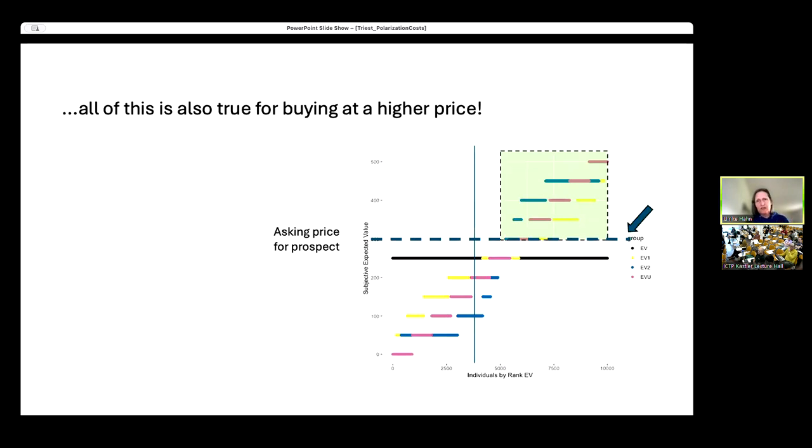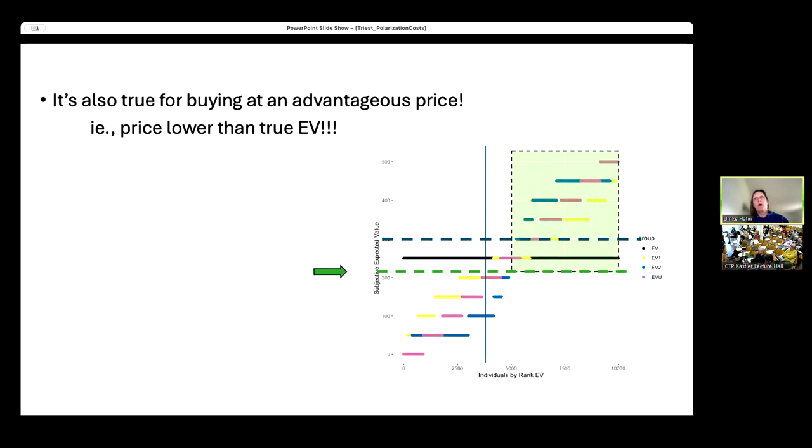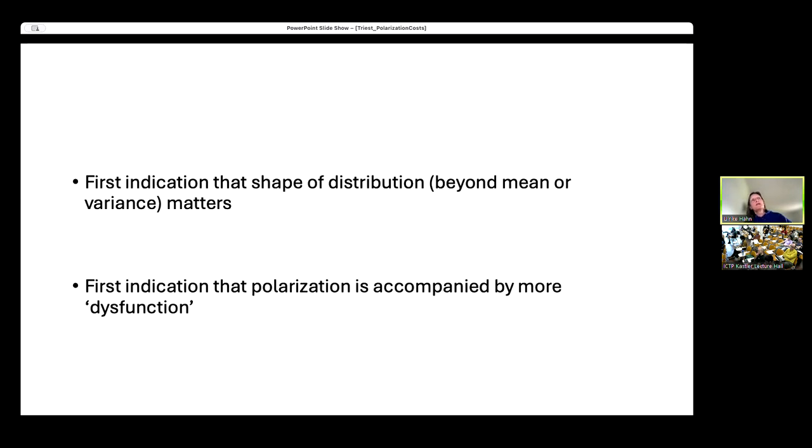Now, all of this is also going to be true if we buy at a higher price. If we're now buying at the dashed line, we're actually doing something stupid. We'd have the same dynamics. But the same thing is also true if I'm offered this thing at an advantageous price. Now I would be making a profit and it's still going to be the case that I'm going to have this larger minimum additional outlay for the bimodal distribution.